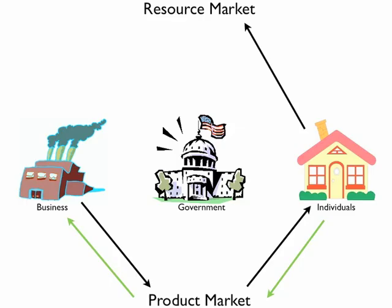Businesses need resources from individuals. We, as individuals, own our land, labor, capital, and entrepreneurship. Businesses then convert resources from individuals into goods and services. Businesses need to pay for all the resources they are using — these resources are called the costs of production: land, labor, and capital. The money individuals receive from businesses is called income.